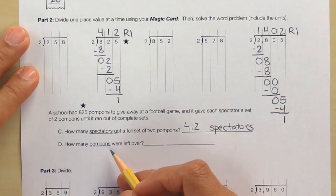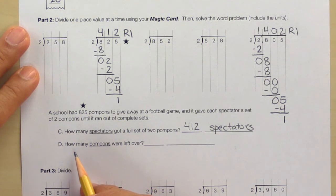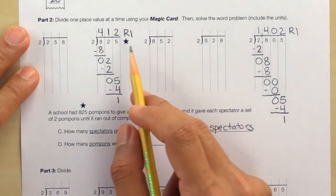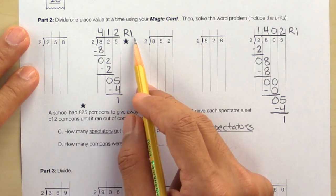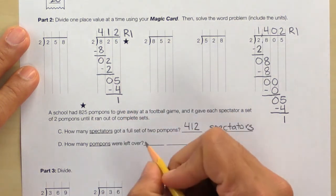Letter D. How many pom-poms were left over? And you can see here we had a remainder of 1 so 1 pom-pom was left over.